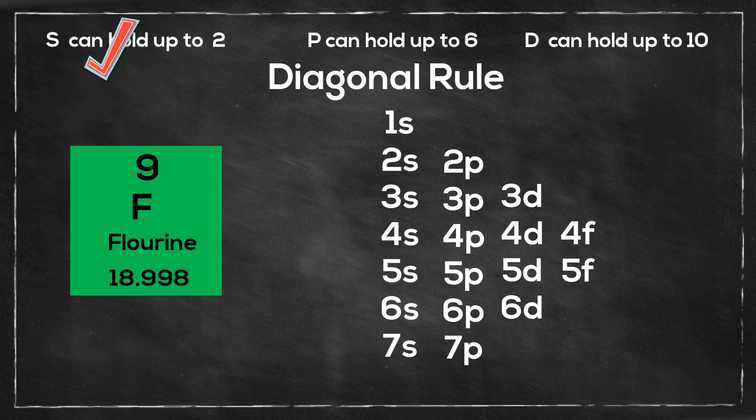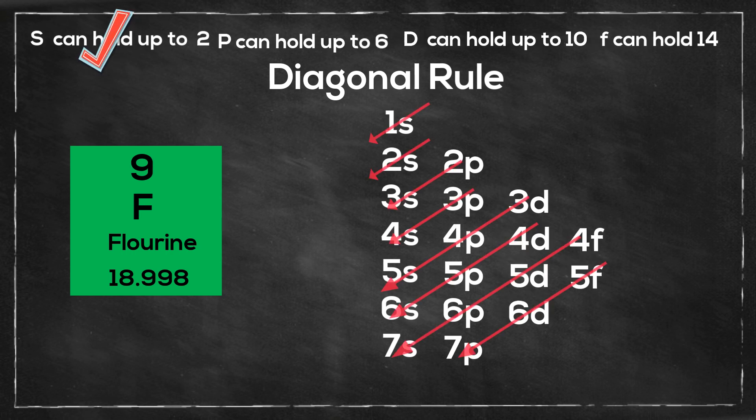The s orbital can hold up to 2, the p orbital can hold up to 6, the d orbital can hold up to 10, and the f can hold up to 14. And notice it goes up by 4 each time.